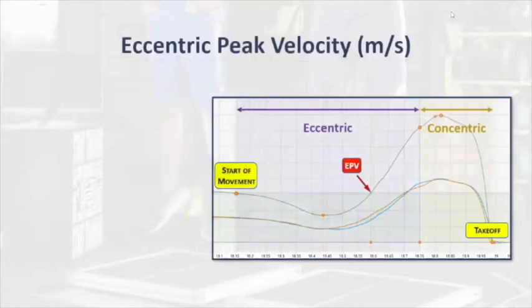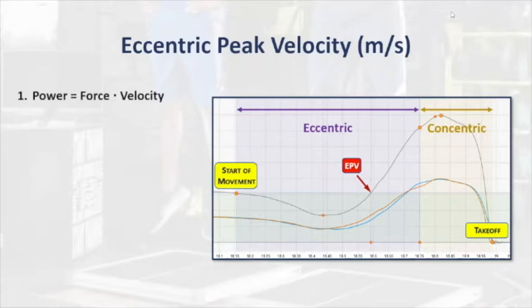The first of which is eccentric peak velocity. Simply put, it's the maximum speed a person reaches while dropping down before a vertical jump. This power equation nicely summarizes the relationship between power, force, and velocity.